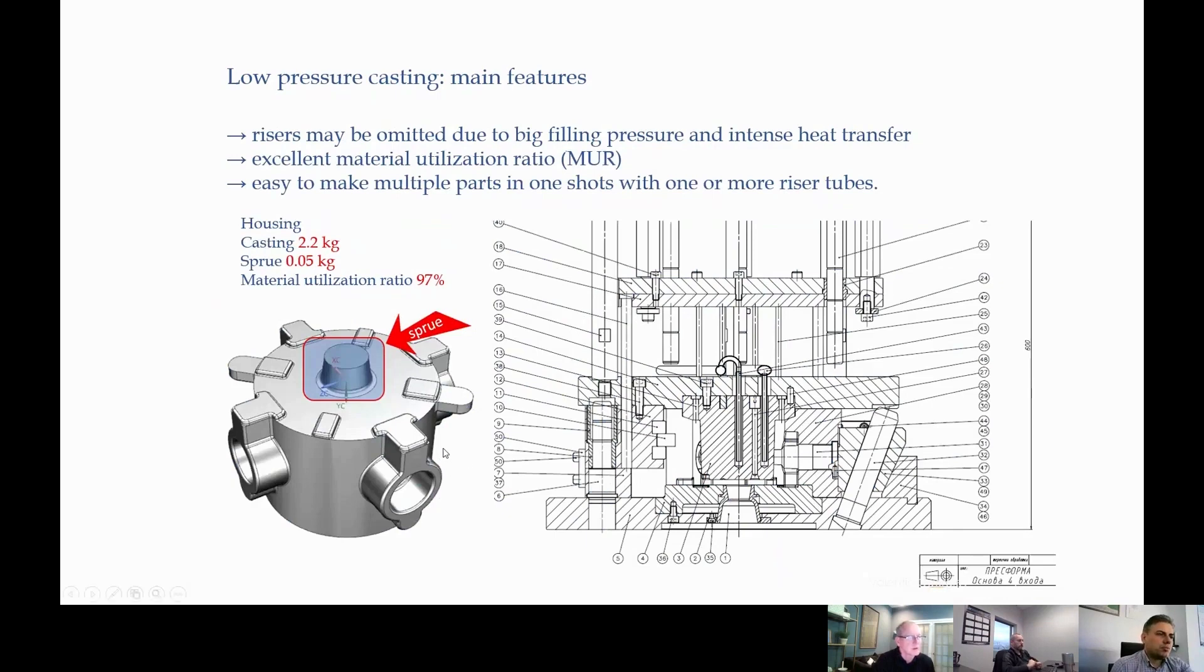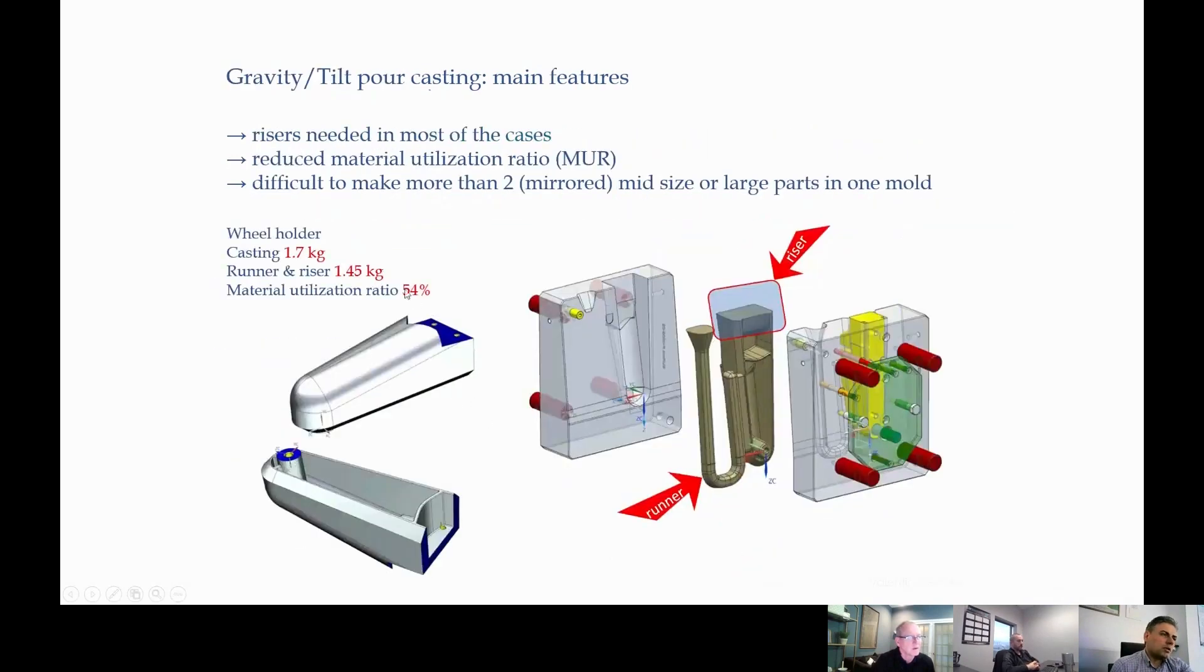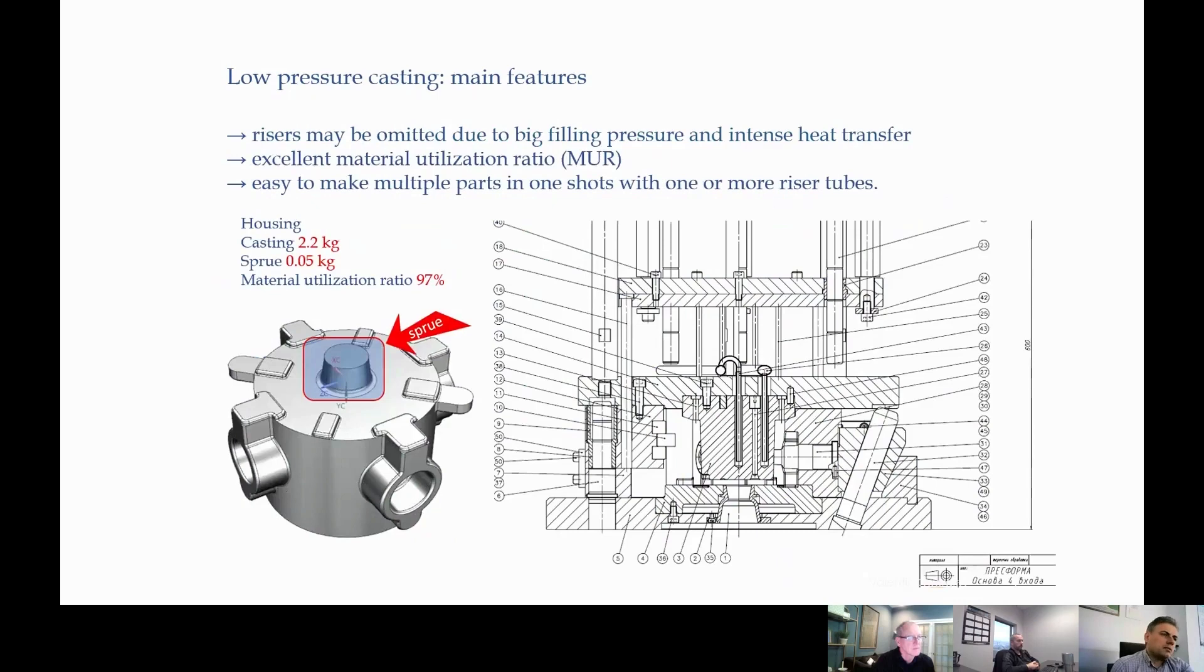Yes. If you imagine this part made by gravity, it should be surrounded by runners and then risers on the top. And after all, we will go back again to this 40-60% of material utilization ratio. But now we have much higher, and this is a big saving for the foundries.